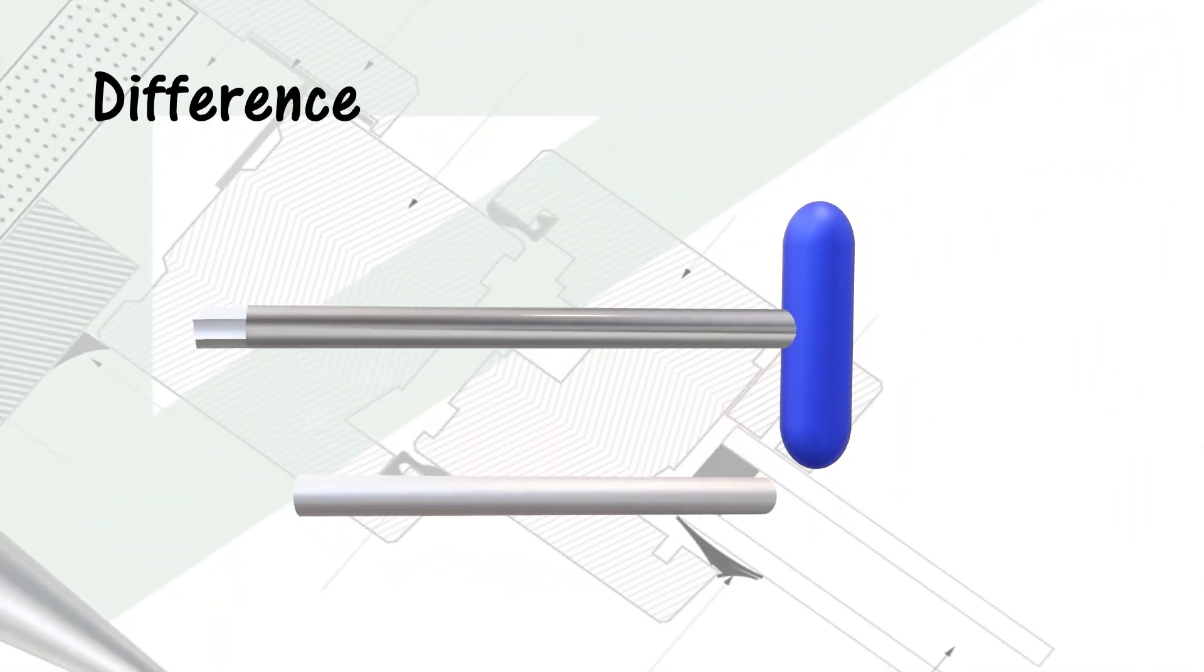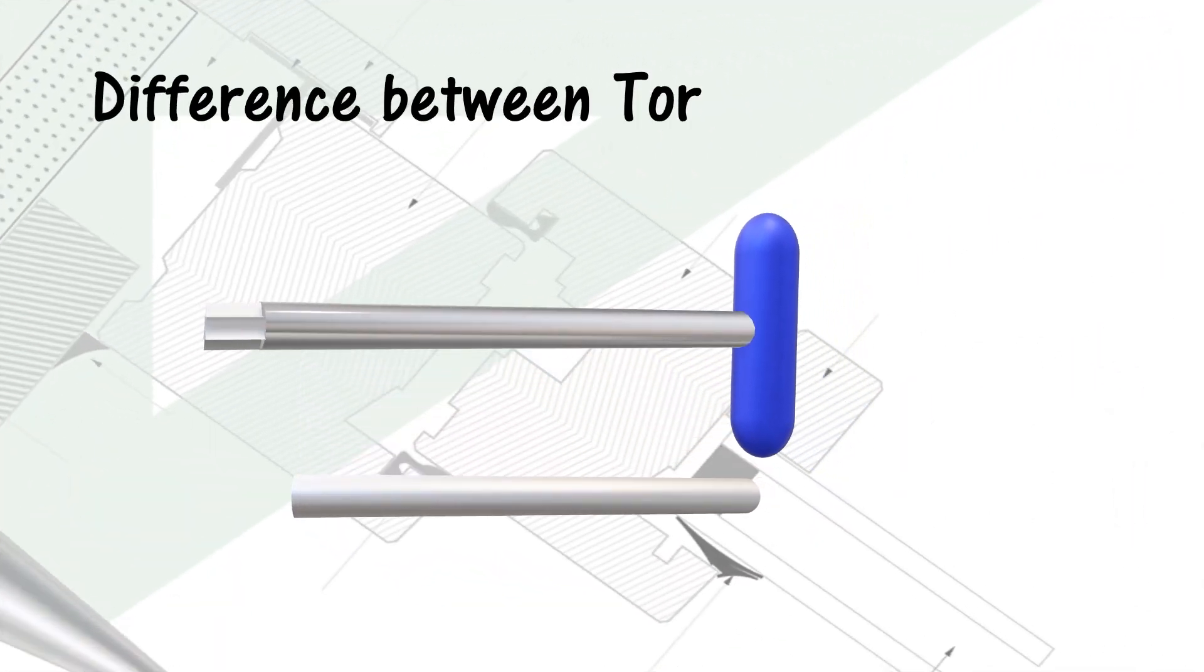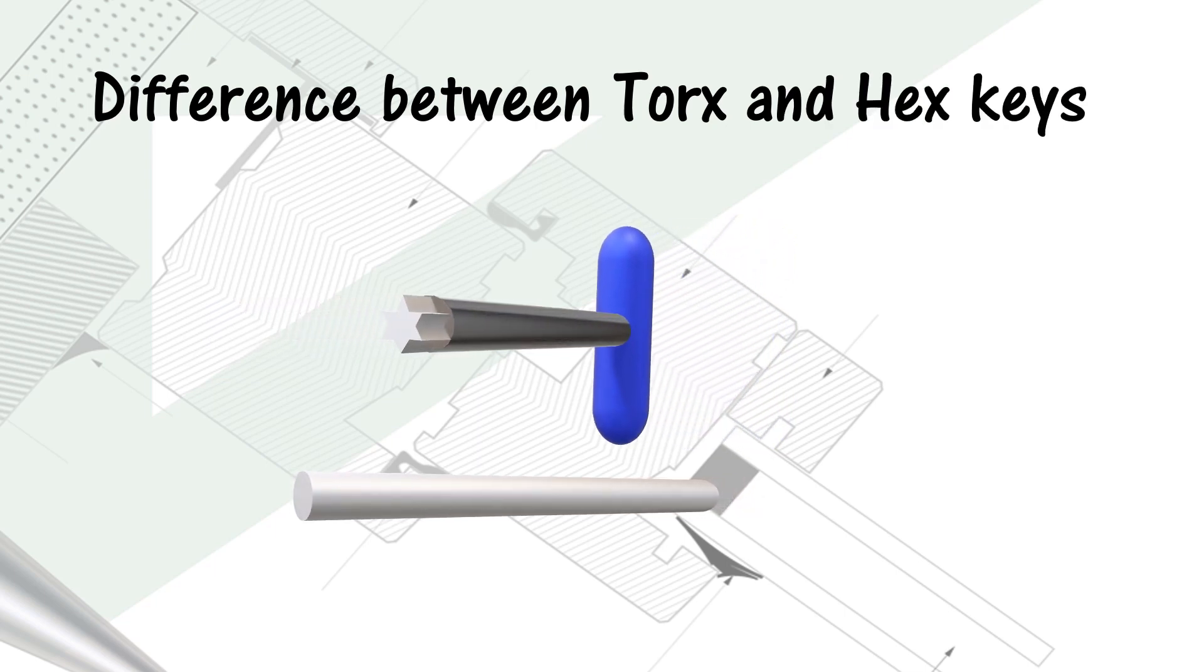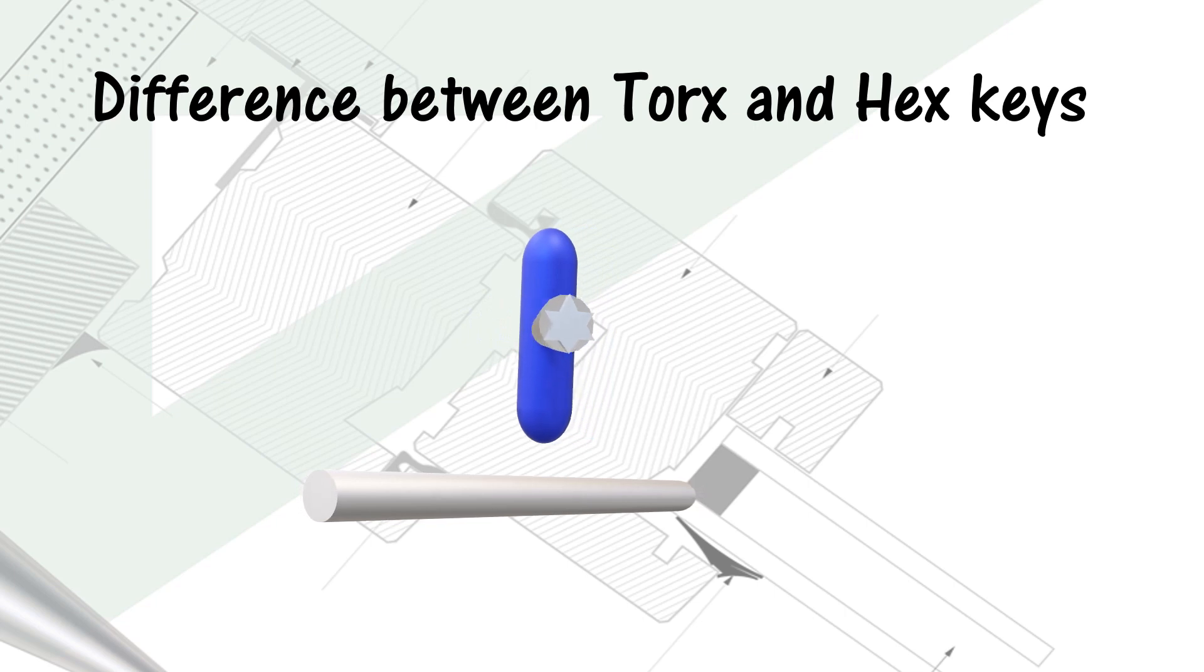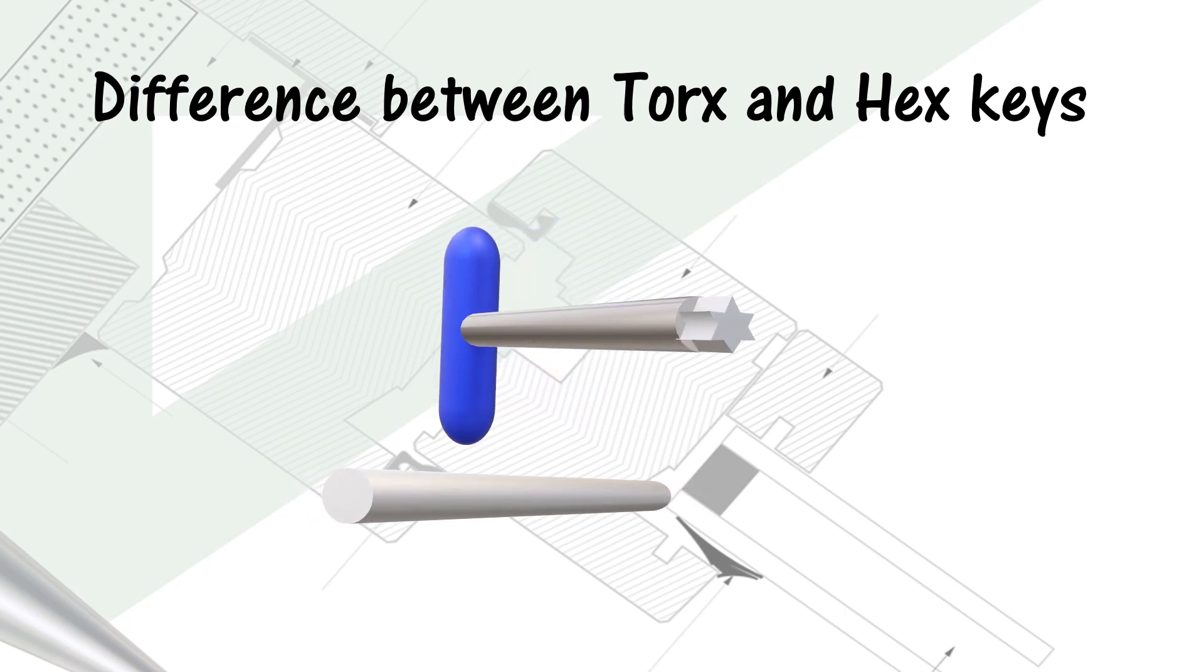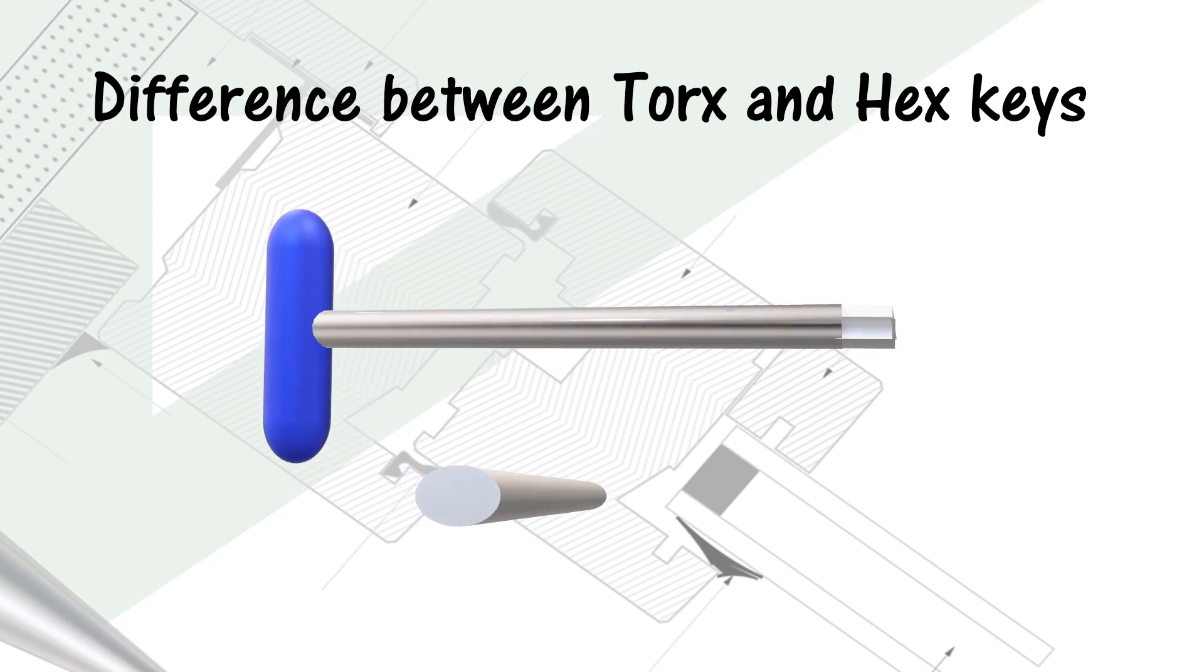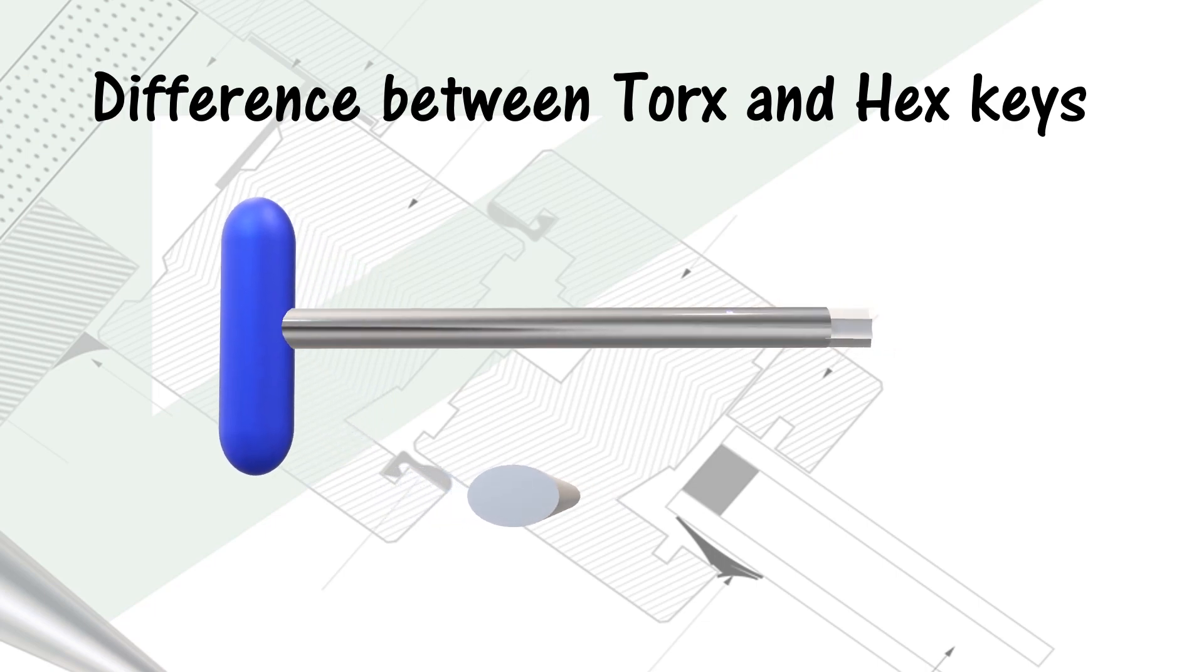And if you make a cross-section of a Torx key, you will find that the star shape does not continue throughout the bar of the tool, but that is circular. The star shape is only at the tip or the head of the working tool.